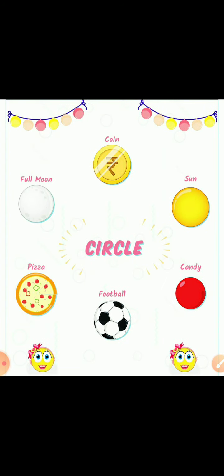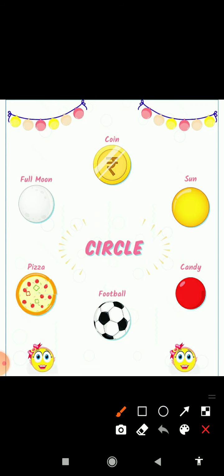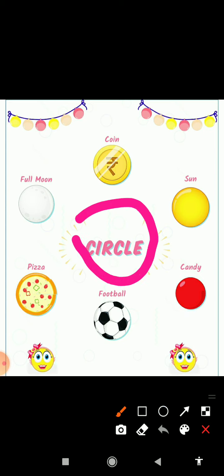So, which shape is this? Tell me which shape is this? This is circle shape. Round round circle, round round circle, round round circle.